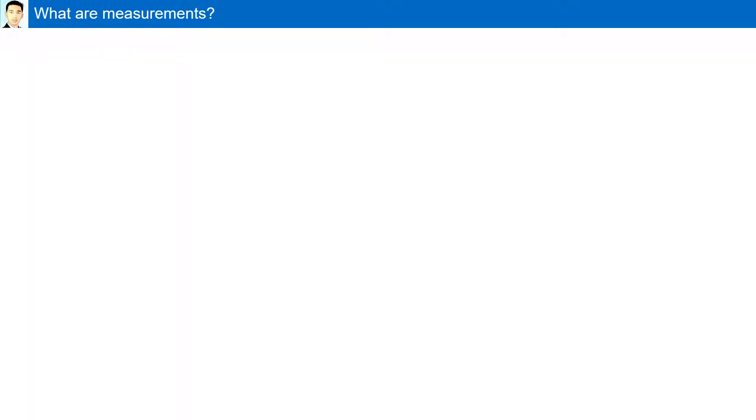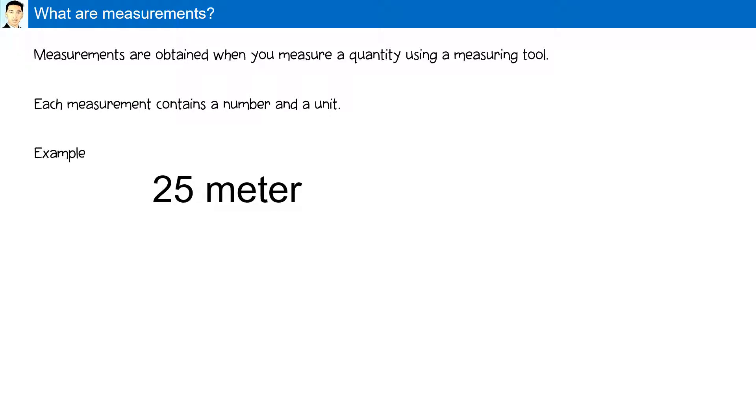What are measurements? Measurements are obtained when you measure a quantity using a measuring tool. Each measurement contains a number and a unit. For example, 25 meters. 25 is the number and meter is the unit.